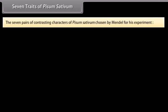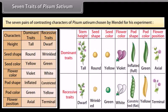Seven traits of Pisum sativum. The seven pairs of contrasting characters of Pisum sativum chosen by Mendel for his experiment are shown here. Why Pisum sativum?